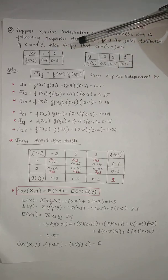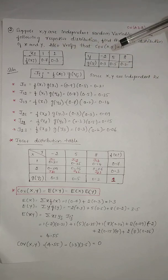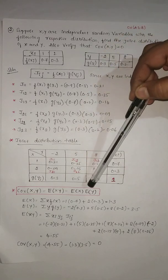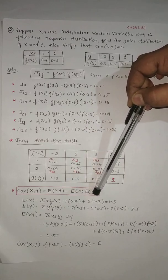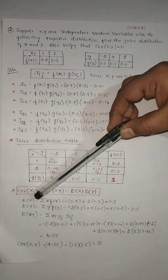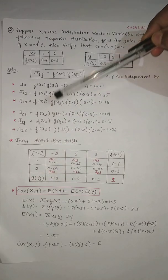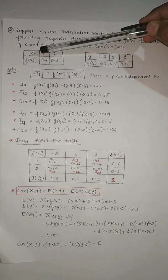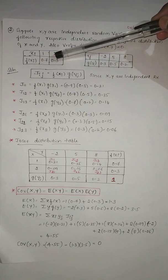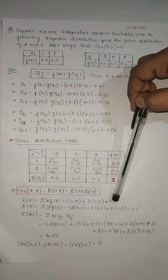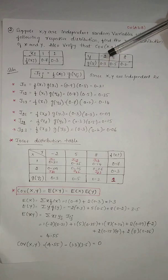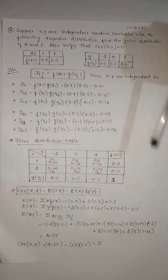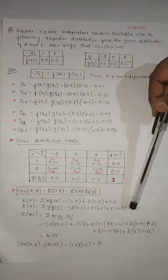Now we need to verify whether covariance of x and y is 0 or not. The formula for covariance of x and y is E(xy) minus E(x) multiplied by E(y). First, find E(x) using the formula summation of x·f(x), so 1 into 0.7 plus 2 into 0.3, which gives 1.3. And E(y) is summation of y·g(y), that is minus 2 into 0.3 plus 5 into 0.5 plus 8 into 0.2, giving 3.5.